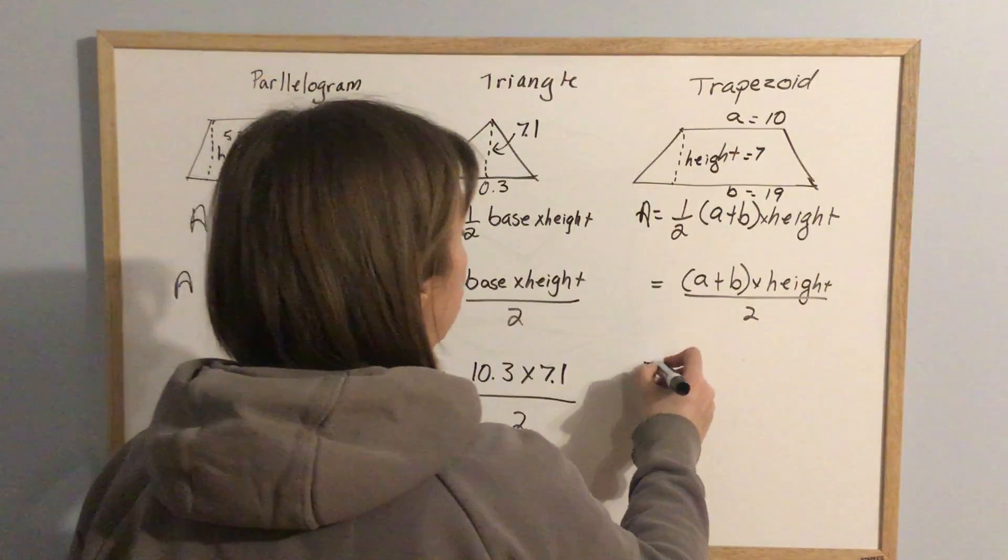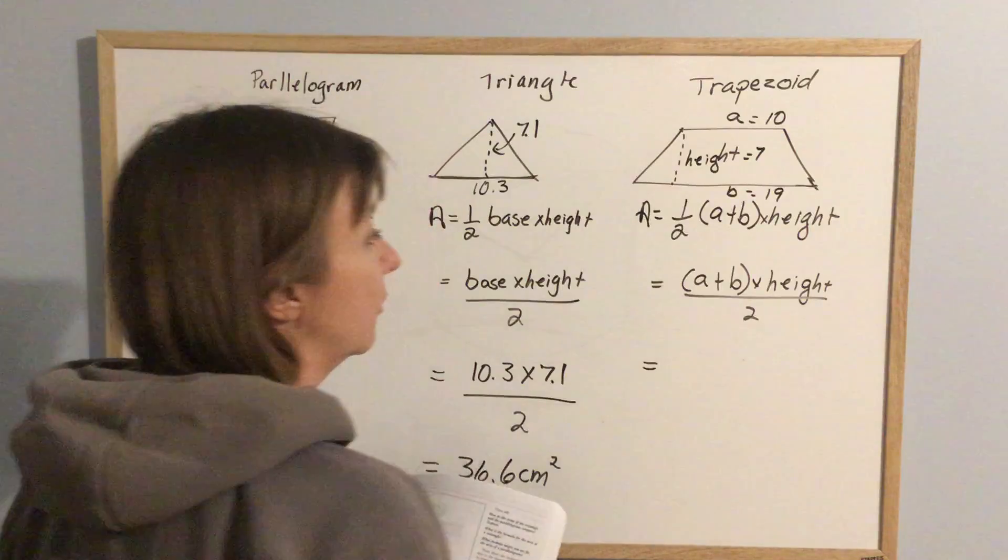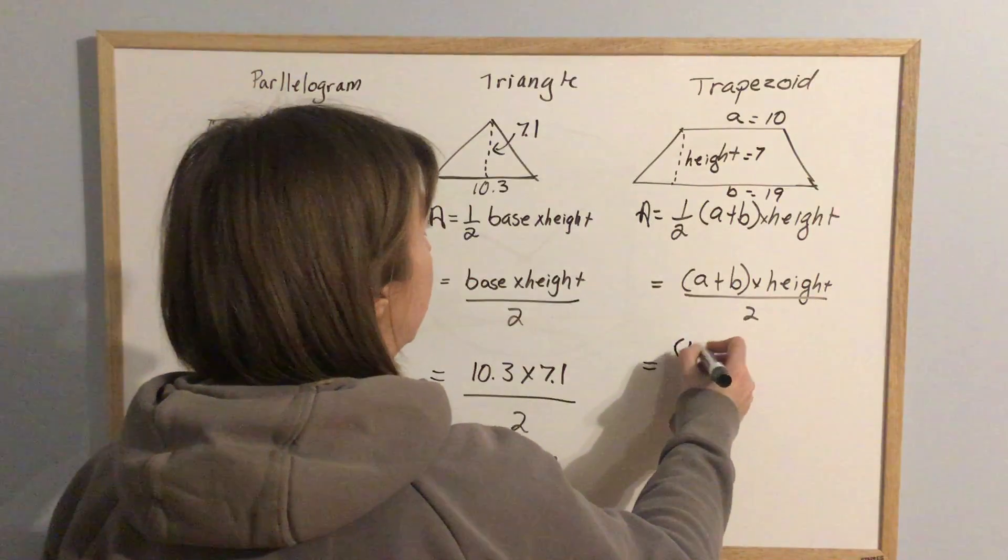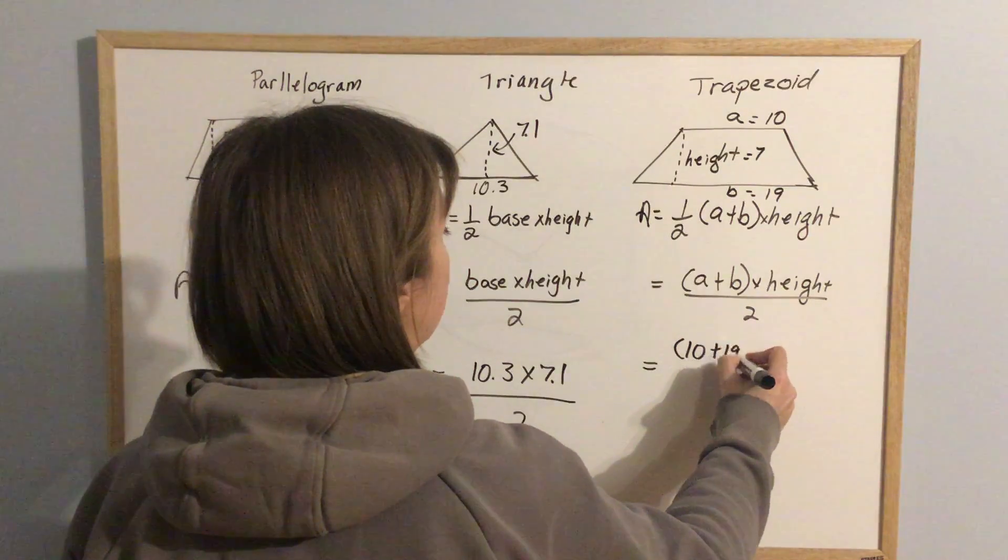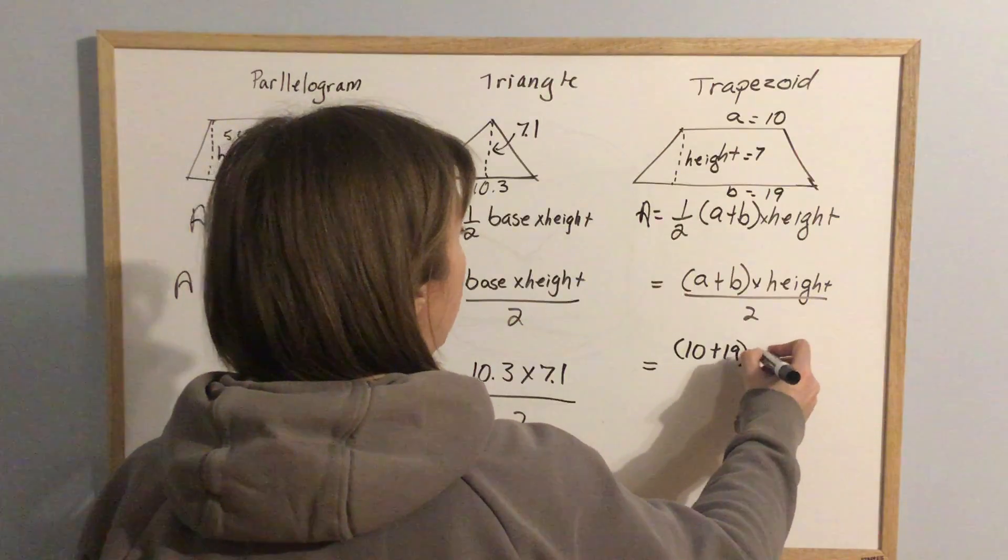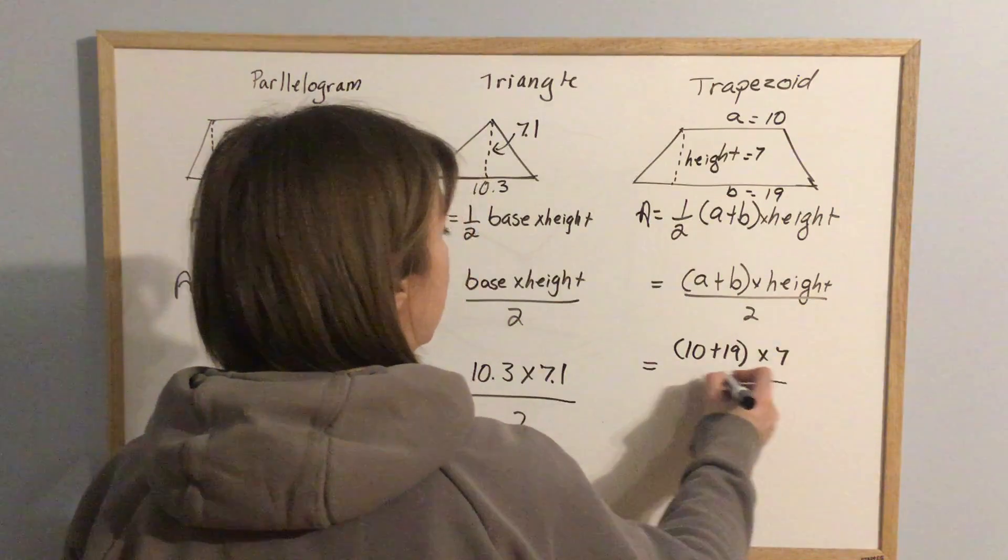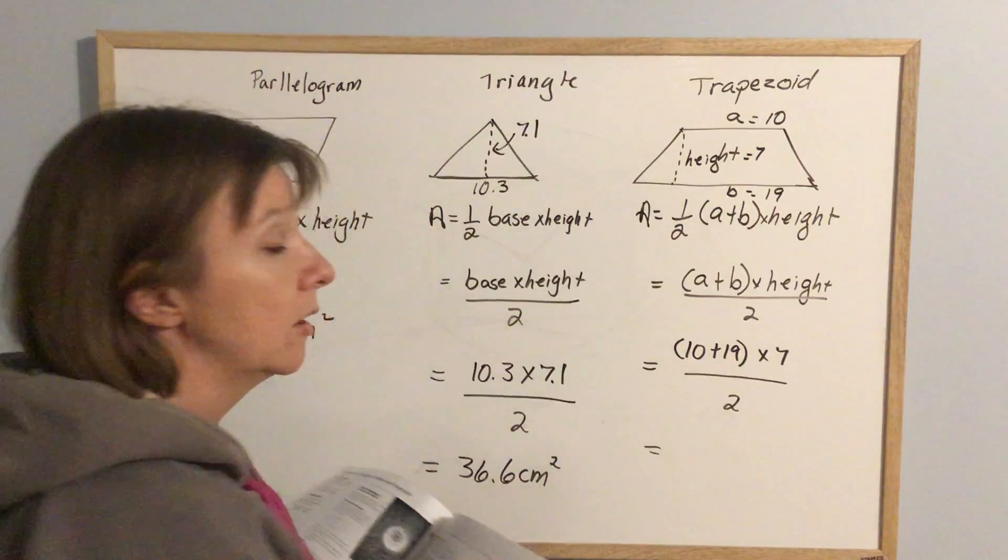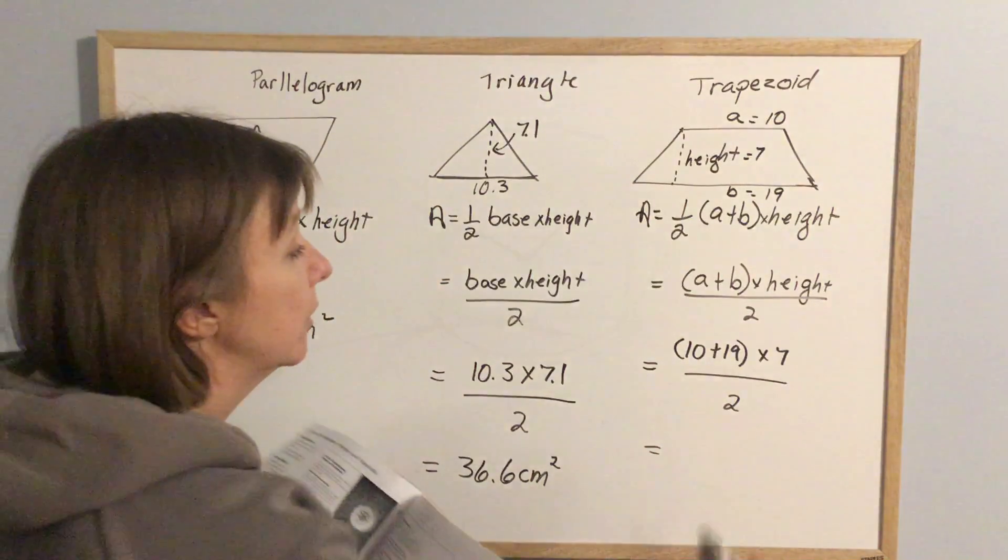So again, I don't care which one you do. I find people tend to do this one. So 10 plus 19 times my height of 7 divided by 2. Again, order of operations is very important. Do your bracket first.